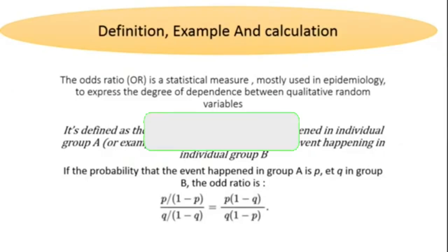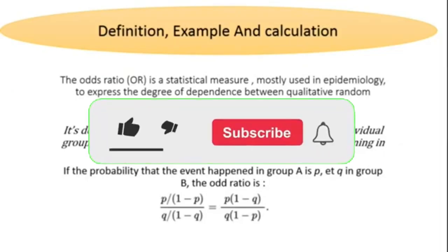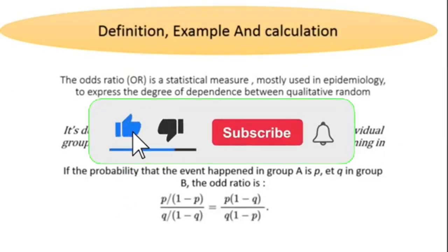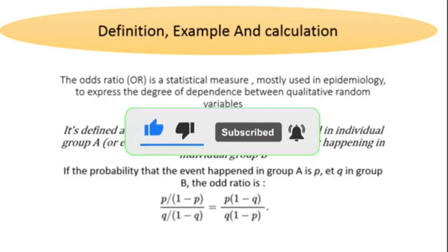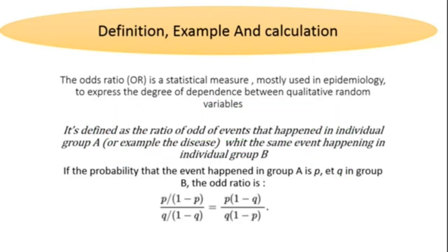By definition, the odds ratio is a statistical measure mostly used in epidemiology in order to express the degree of dependence between two qualitative variables. In odds ratio analysis, we have two qualitative variables and we search for the link between them. The odds ratio can also be defined as a ratio of odds of an event happening in one group versus another.